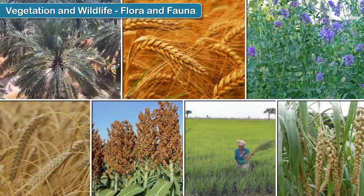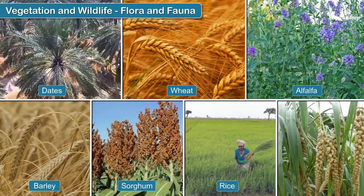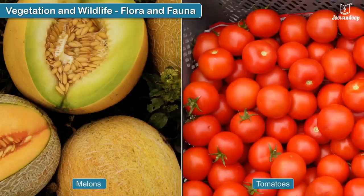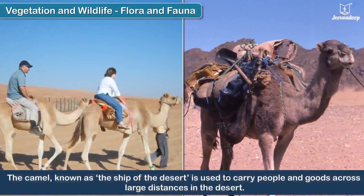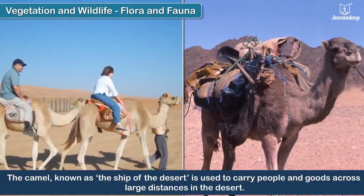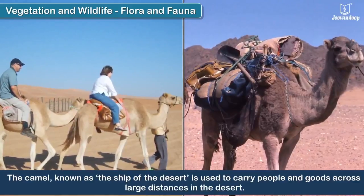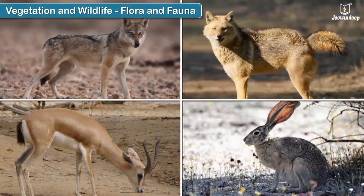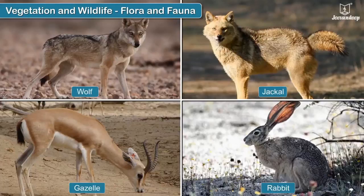The main crops grown in Saudi Arabia include dates, wheat, alfalfa, barley, sorghum, rice and millets. Melons and tomatoes are also grown here. The camel, known as the ship of the desert, is used to carry people and goods across large distances in the desert. We also find other animals like wolves, jackals, gazelles and rabbits in Saudi Arabia.